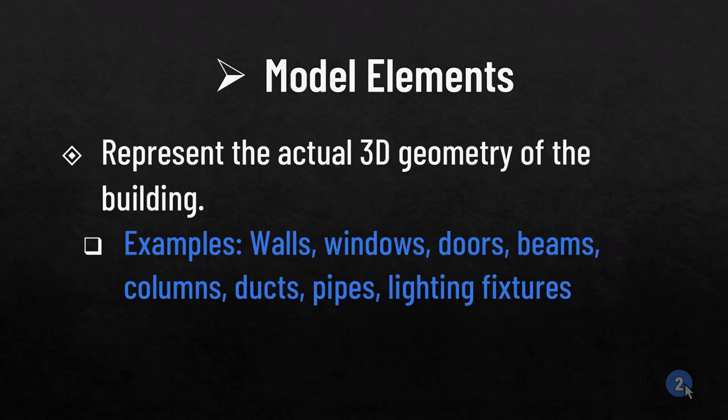Model elements represent the actual 3D geometry of the building. Examples include walls, windows, doors, beams, columns, ducts, pipes, and lighting fixtures. These can be instances of system families or loadable families. The key point is that model elements are those that represent the actual 3D geometry of the building.